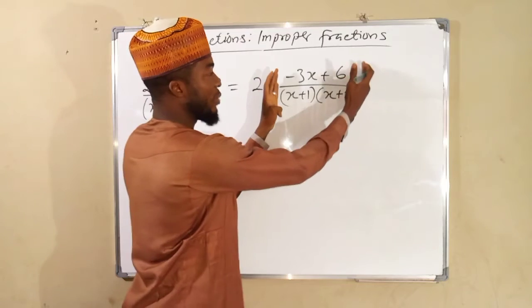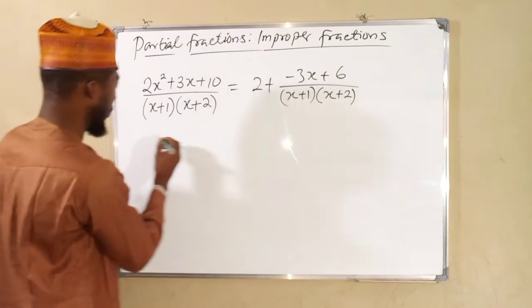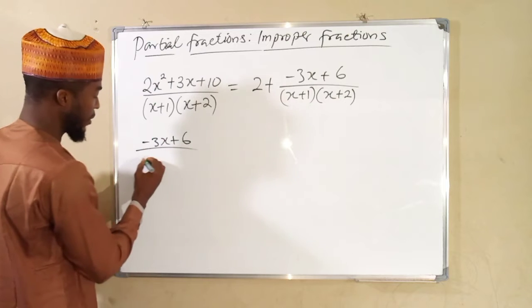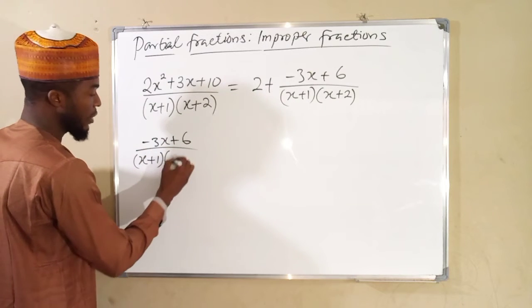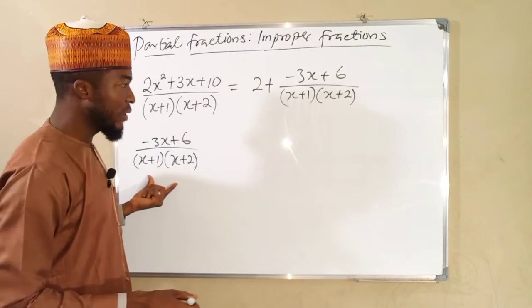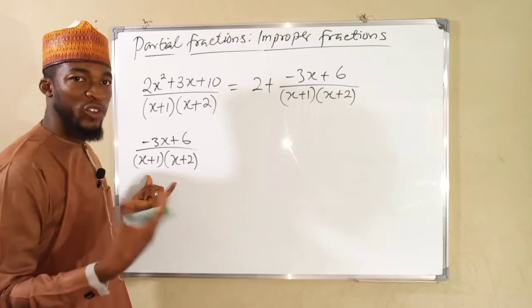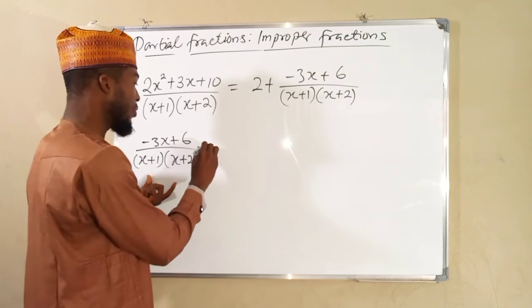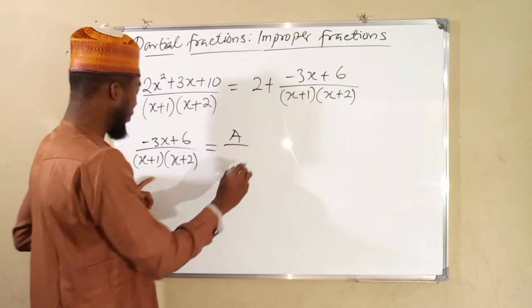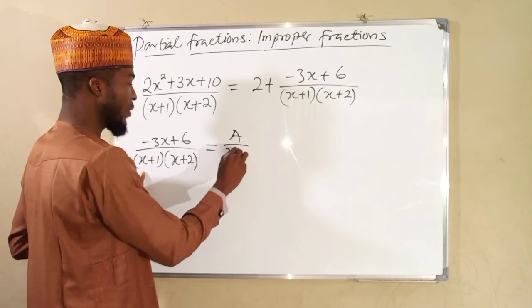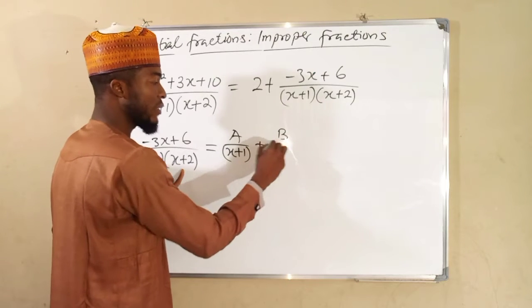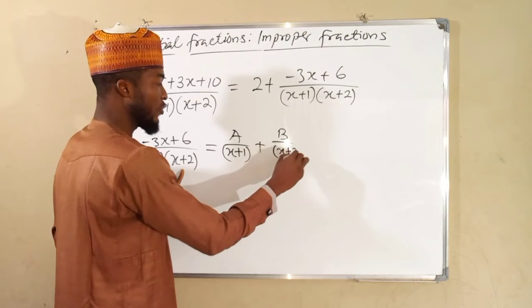So first of all, let us split this into partial fractions. This is negative 3x plus 6 over x plus 1, x plus 2. All the factors are linear factors. Therefore, their corresponding numerators are going to be constants. And because there are two, we are going to obtain two fractions. So the first one is going to be a constant divided by the first factor, x plus 1, then plus another constant over x plus 2.